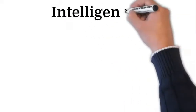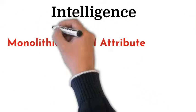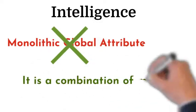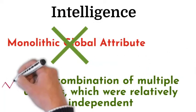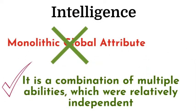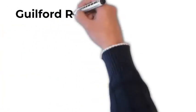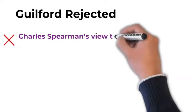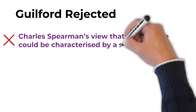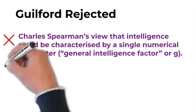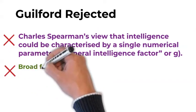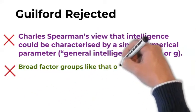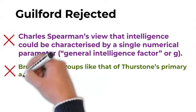Guilford believed that intelligence was not a monolithic, global attribute, but a combination of multiple abilities which were relatively independent. Guilford rejected Charles Spearman's view that intelligence could be characterized by a single numerical parameter, General Intelligence Factor or G. He also rejected broad factor groups like that of Thurston's primary abilities.